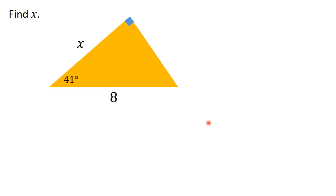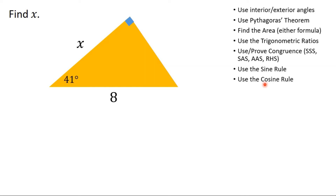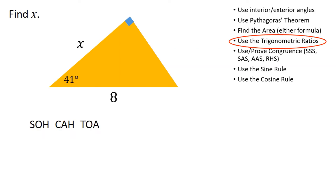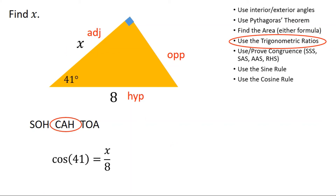Another question — and again I notice the right angle straight away, so I'm thinking either Pythagoras or the trigonometric ratios. Looking closer I see two sides and an angle, so I'm going to be using SOHCAHTOA again. I label my triangle: the adjacent is x and the hypotenuse is 8, so I'm going to use CAH because I've got adjacent and hypotenuse. So cos 41 = x/8 — I multiply both sides by 8 and type 8 cos 41 into the calculator to get x ≈ 6.04.